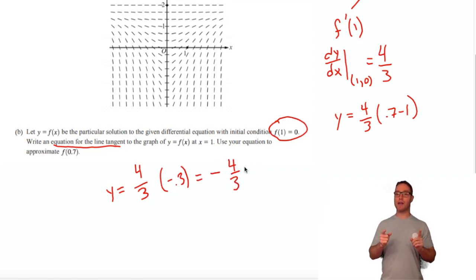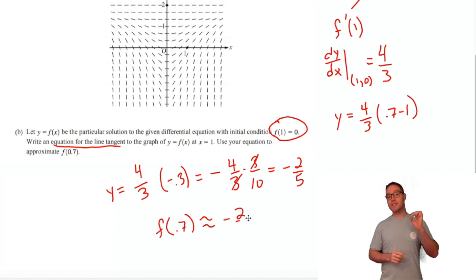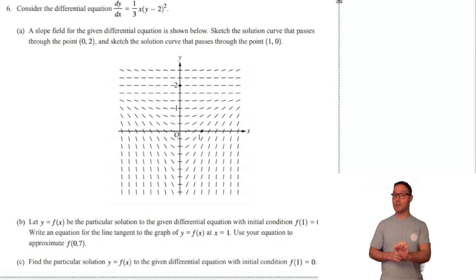So we plug in 0.7 and get -0.3. Now I'm a fraction person, I'm not a big fan of decimals. I'm going to change 0.3 to 3/10. The 3's cancel out and you get -4/10. Reduce and you get -2/5, which is -0.4 in decimal. The way I'm going to state my answer is that f(0.7) is approximately -2/5 or -0.4. It's not equal to it, that was the linear approximation.